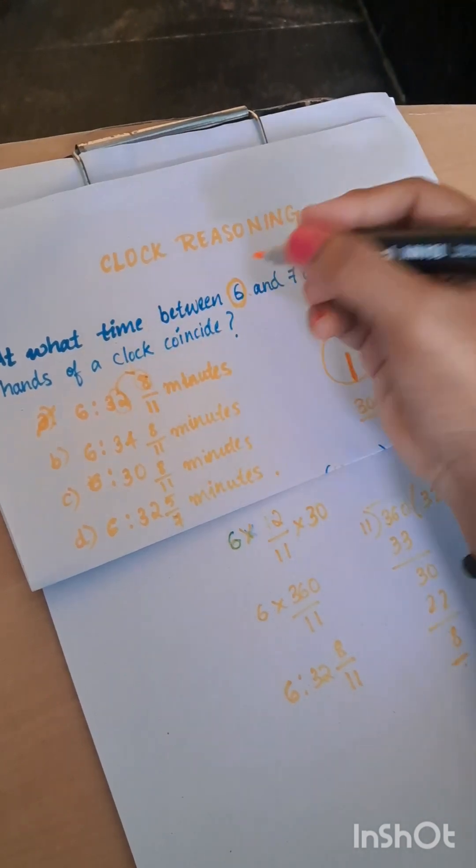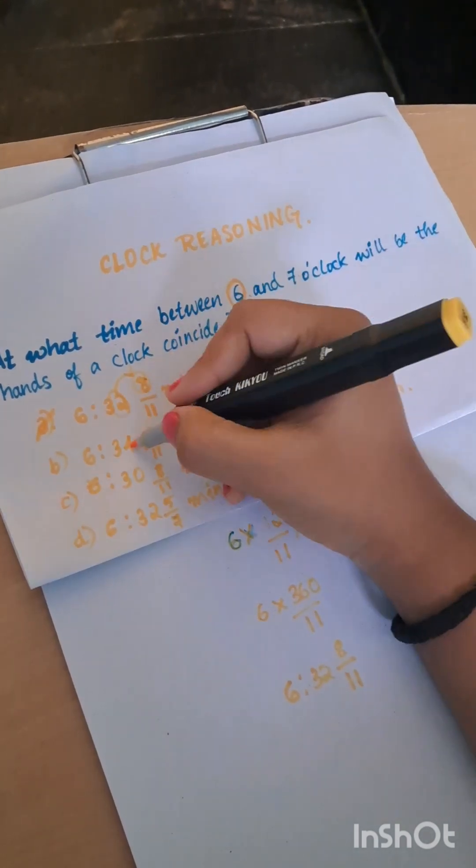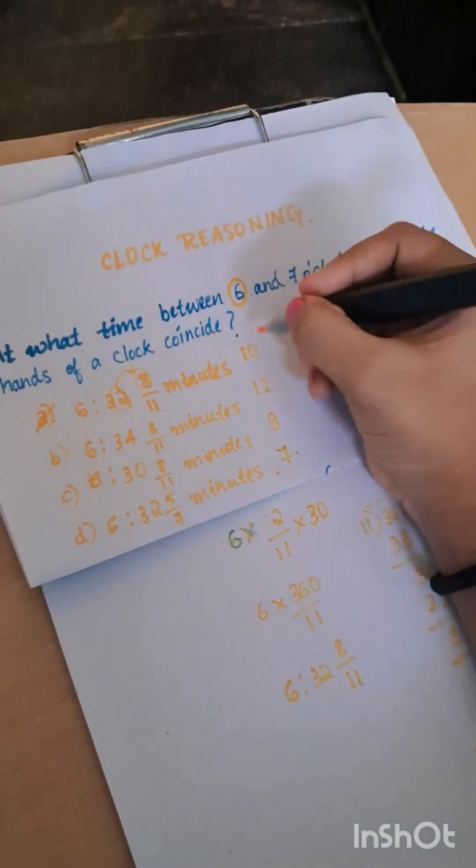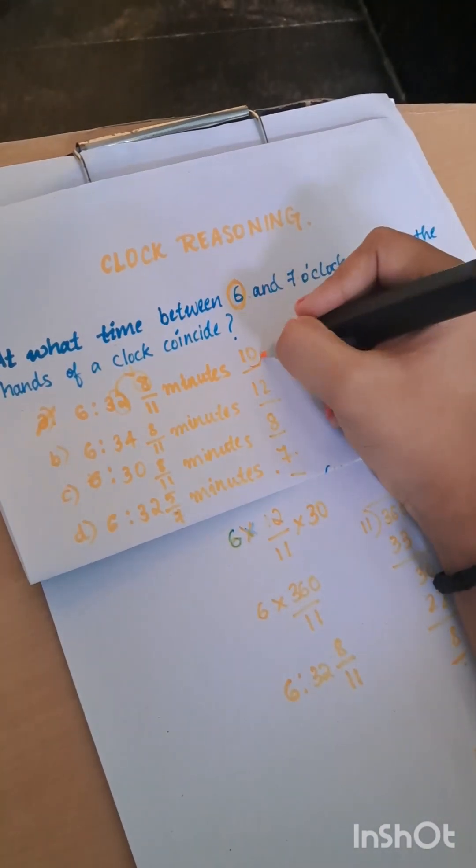When we do it, 8 plus 2 is 10, 8 plus 4 is 12, 8 plus 0 is 8, and 5 plus 2 is 7. Now just see which number ends with 0. This number is ending with 0, so therefore the answer would be option A.